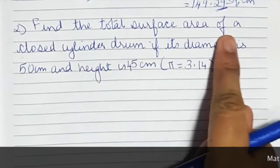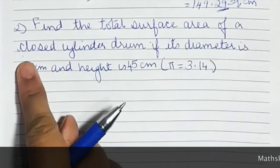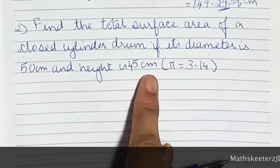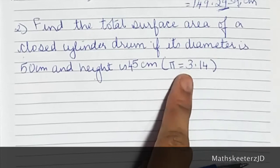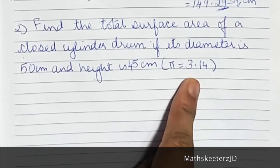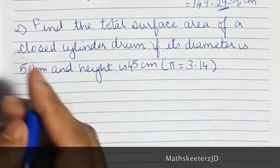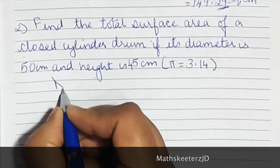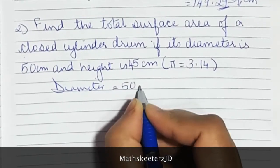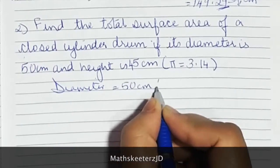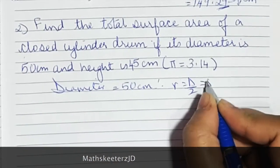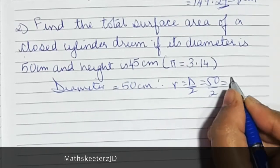Number 3: Find the total surface area of a closed cylinder drum if its diameter is 50 and height is 45. The value of pi given here is 3.14. The diameter is 50, therefore radius will be diameter upon 2, that is 50 upon 2, which is 25.